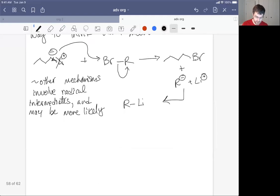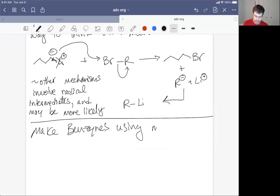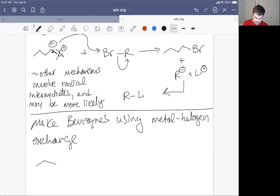Let's kind of pick up where we left off at the end of the last lecture and make a benzyne intermediate. So you can actually make benzynes using metal halogen exchange. What we do here is we could have benzene with a halogen and some leaving group. And a pretty easy example would be dibromobenzene.